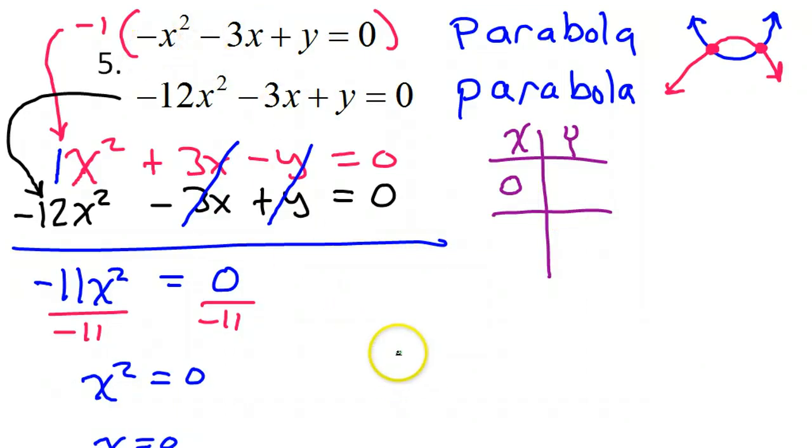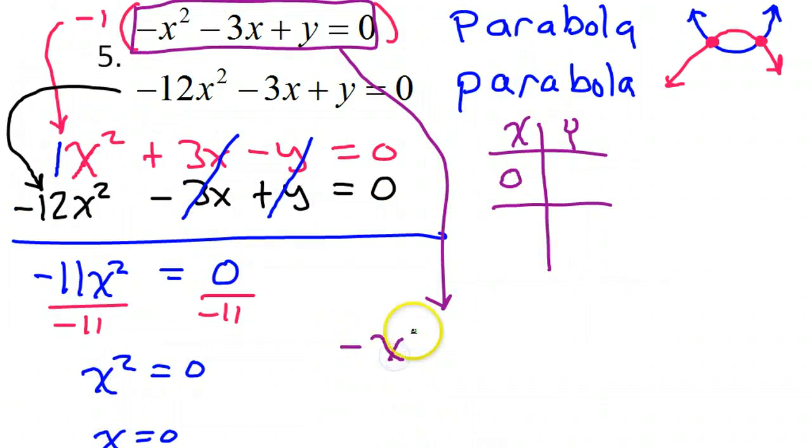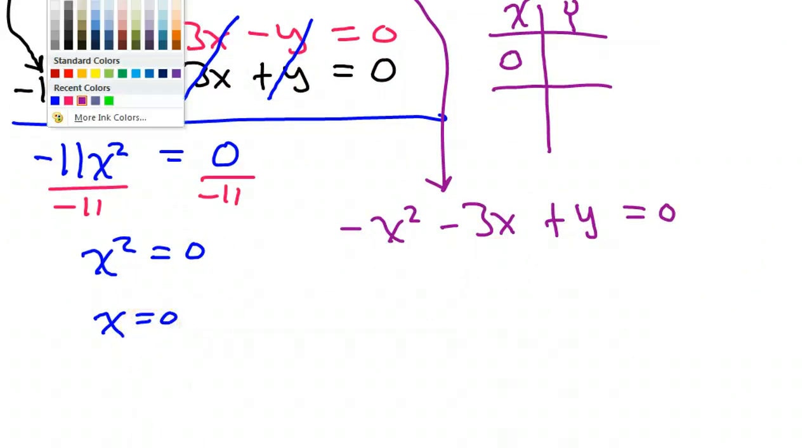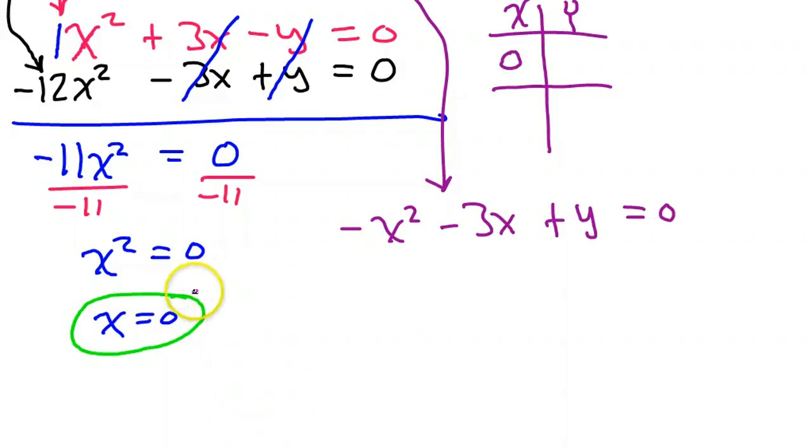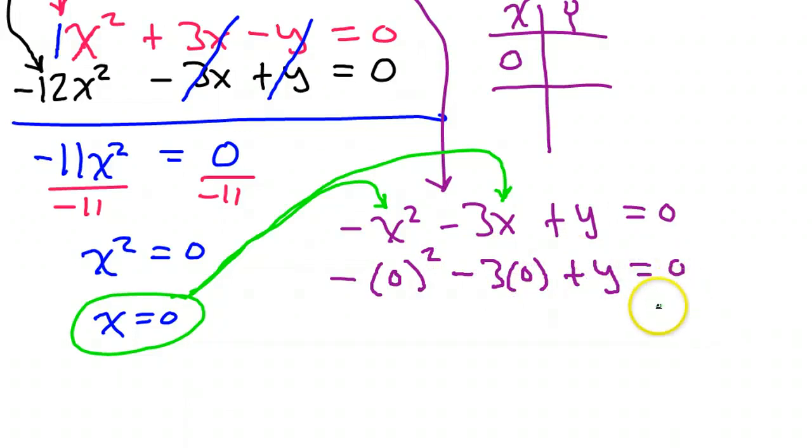Now, let's substitute this x value of 0 back into one of the original equations and see what we get for our y value. I'm just going to use the top equation because it looks slightly more simple. So I've got -x² - 3x + y = 0, but x equals 0. So that's going to give me the opposite of 0² minus 3 times 0 plus y equals 0. Obviously, this is just going to be 0 and 0, so it's really just telling me that y equals 0.